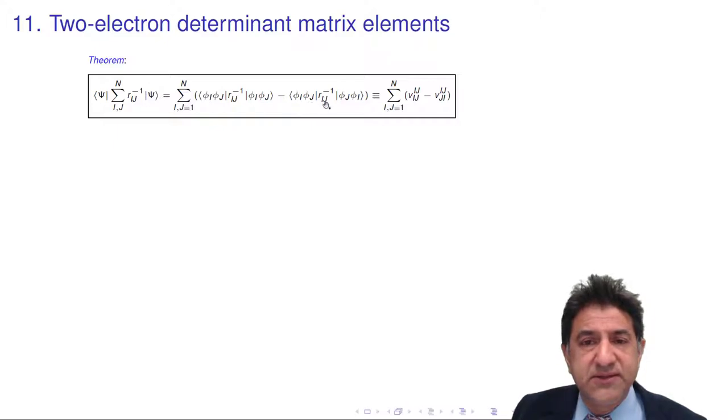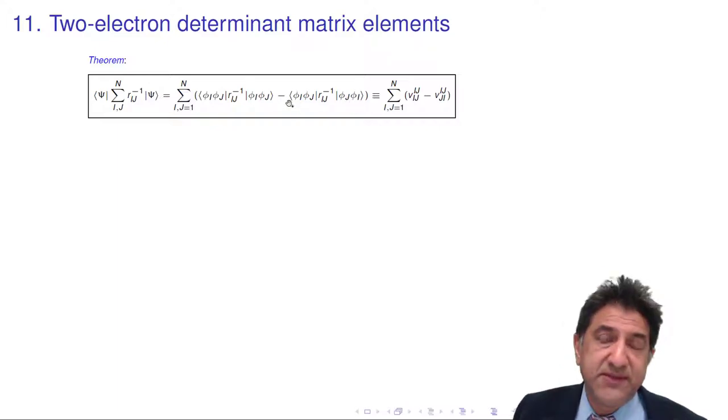phi i, phi j, one on ri j to the minus one. What's the difference? Instead of phi i, phi j, we have here phi j, phi i. So this is exchanged. The last two terms are swapped, and we have a minus sign.